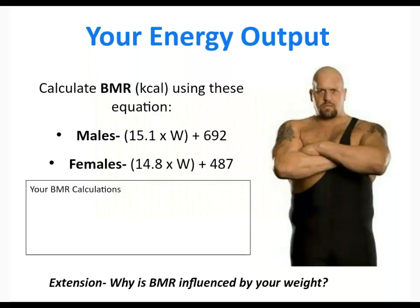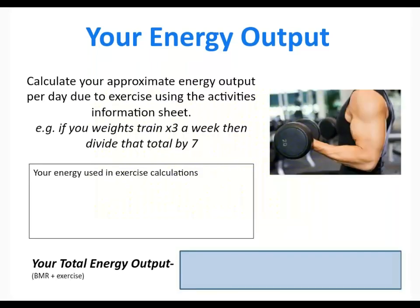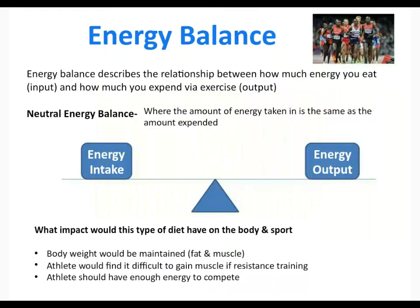How do you work out your BMR? There are equations to estimate it. The key variable is your weight, because the more mass you have, the more energy you need to keep it working — though it does depend on lean body mass, which the equations don't fully account for. You can also estimate your energy output using exercise approximation sheets, which say, for example, that half an hour of jogging at a certain speed equals a certain number of calories. Add that to your BMR for a good rough estimate of total energy output.